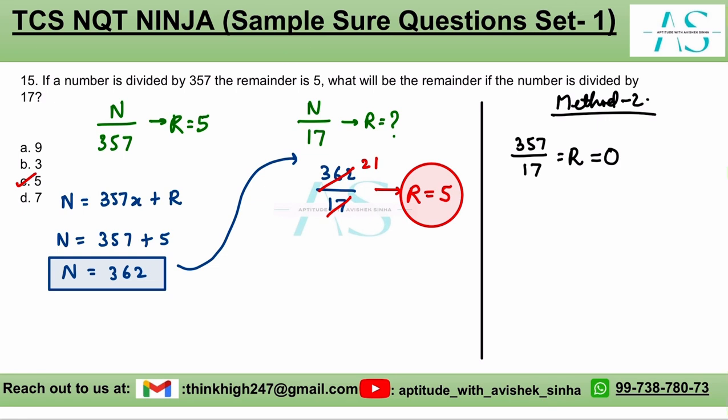What is the remainder in the first case? 5 upon the divisor 2. That is 17. It is 5 upon 17. Now, tell me what is our remainder. The remainder seems to be 5. And that is our answer.